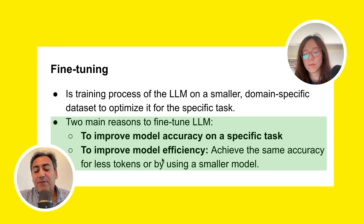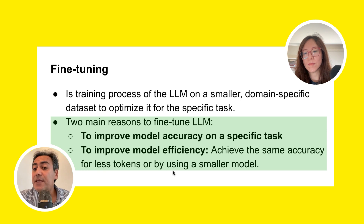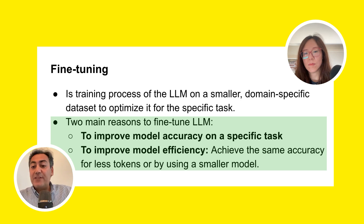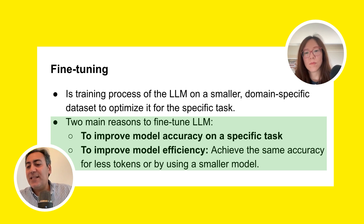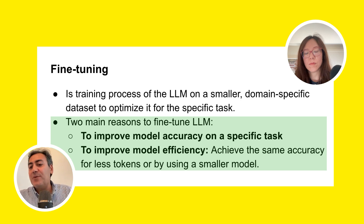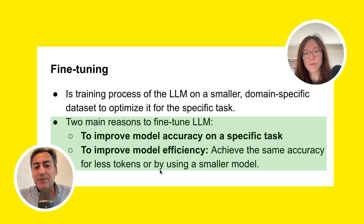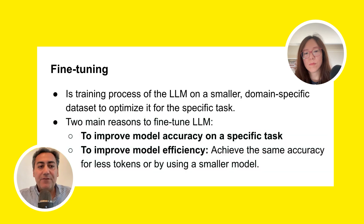The second reason is to improve model efficiency. When you fine-tune a model, you consume a lot fewer tokens. When you don't fine-tune, you have to explain everything in the prompt to make sure the LLM works properly. But when you teach that skill, you don't need all those instructions as part of the prompt. Another reason is by using a smaller model, which is obviously more efficient.